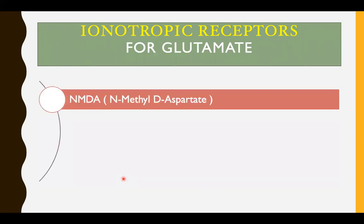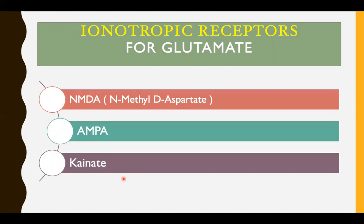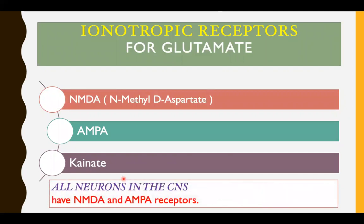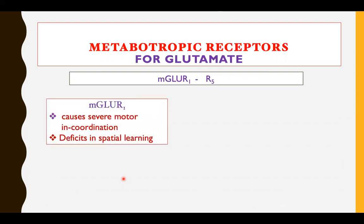The ionotropic receptors for glutamate are NMDA (N-methyl-D-aspartate), AMPA, and kainate. All neurons in the CNS express NMDA and AMPA receptors. The metabotropic receptors are mGluR1 through mGluR5. Defects in mGluR1 are responsible for severe motor incoordination; it is expressed in areas where motor functioning is mediated, such as the basal ganglia and cerebral circuits.